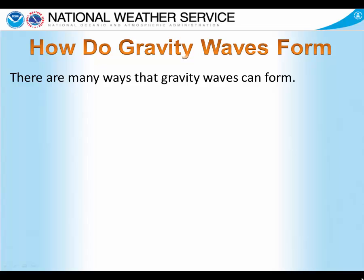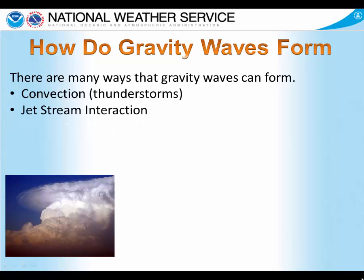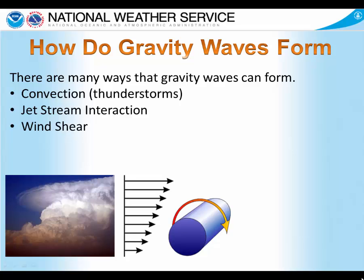So, how do these gravity waves form? There are many different ways. One of the more common ways gravity waves initiate is from convection, or thunderstorms as we know them. Those generally initiate gravity waves either at the top or the bottom of the atmosphere. We can also get gravity waves from interactions with the jet stream, and wind shear in the atmosphere can also produce gravity waves.